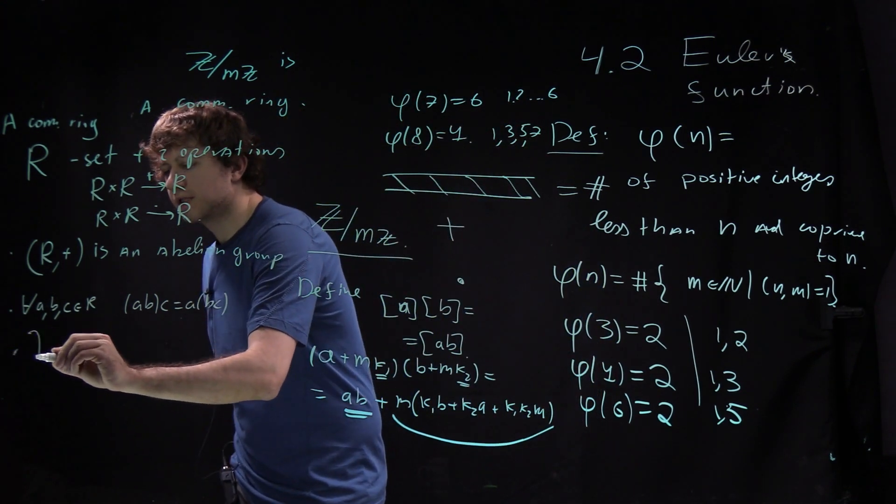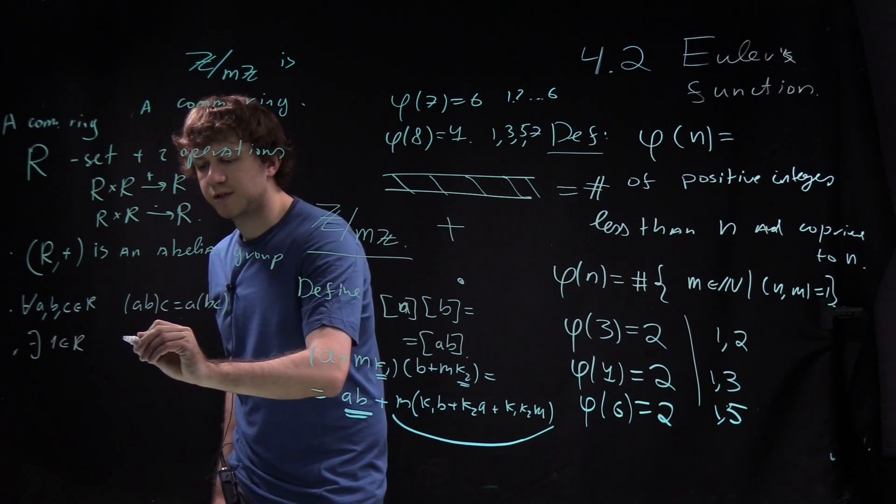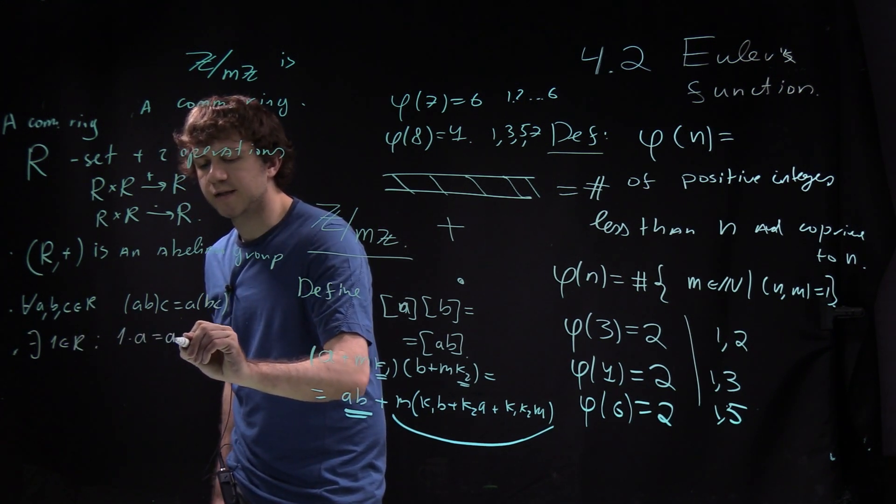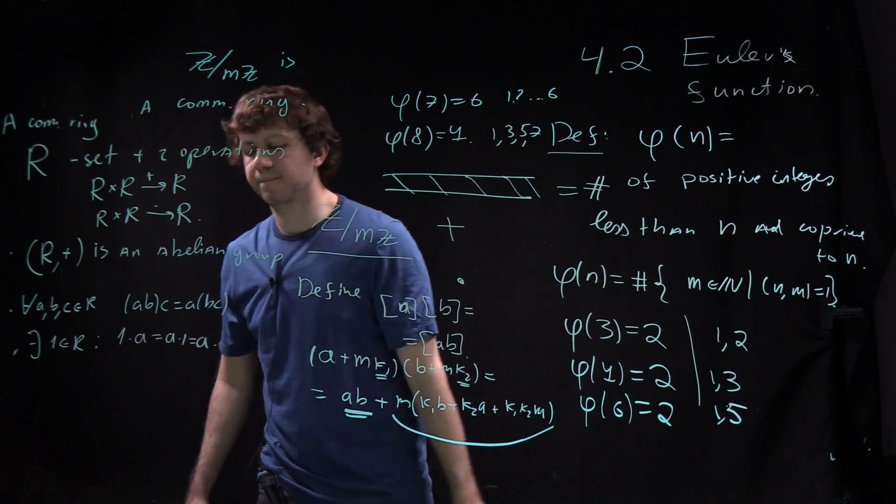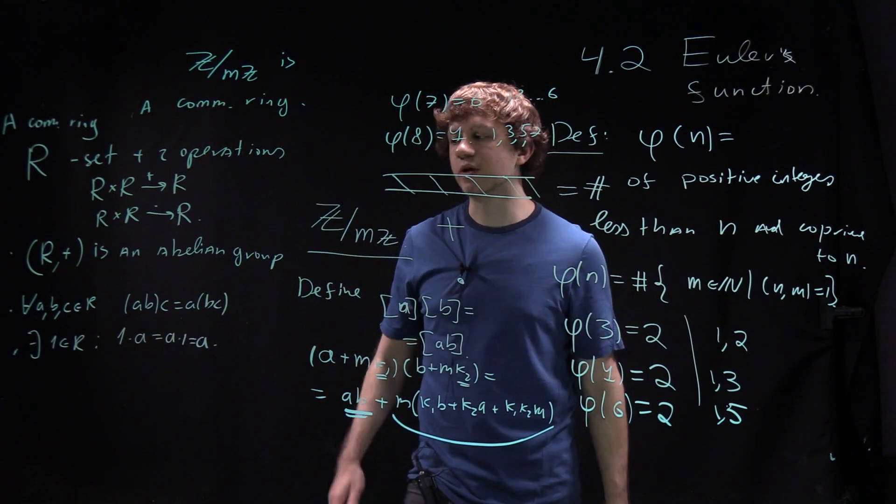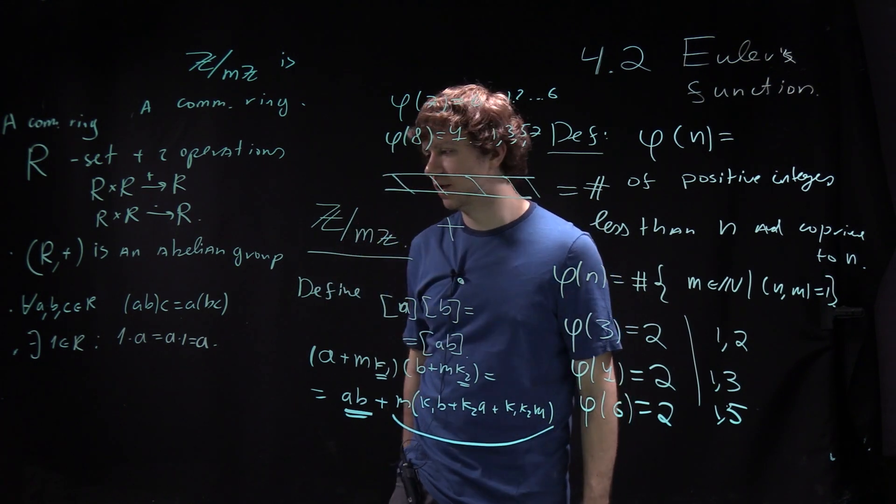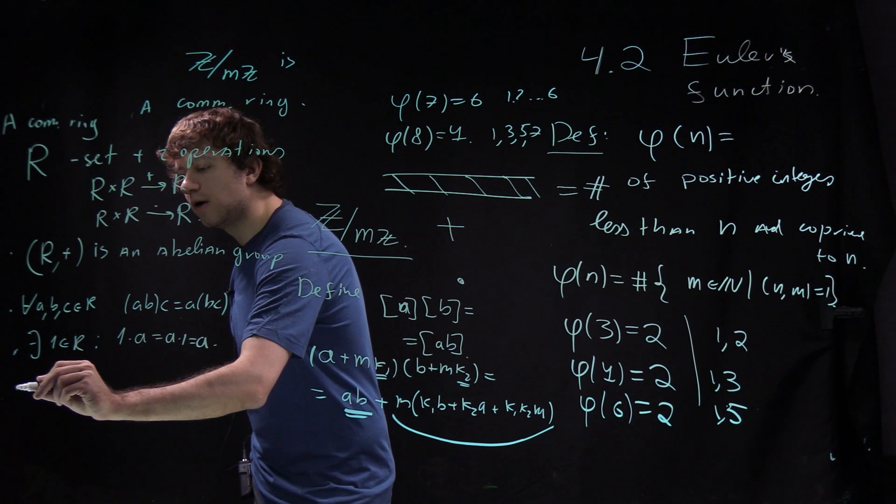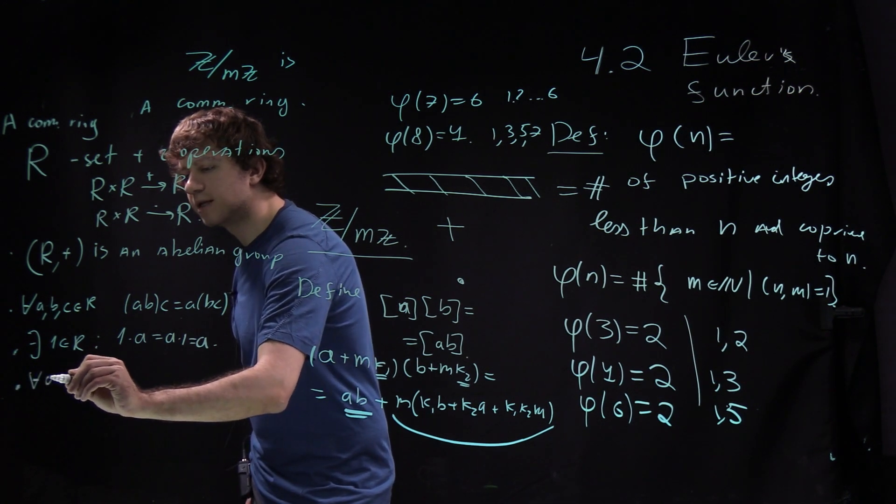There exists element 1 in R, a special element called identity, such that 1 times A equals A times 1 equals A. Sometimes people consider rings without identity, but we'll discuss that next quarter. Finally, we need to say how addition and multiplication interact.